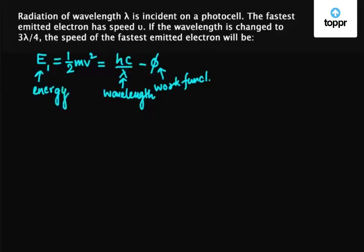Now this wavelength is changed to 3λ/4. So the new equation becomes E₂ equals 1/2 mv₂², where v₂ is the new velocity, equals hc/(3λ/4) minus φ, which equals 4hc/3λ minus φ.